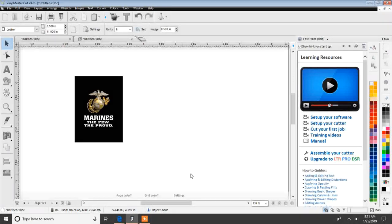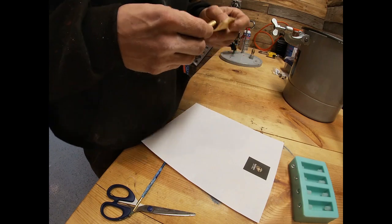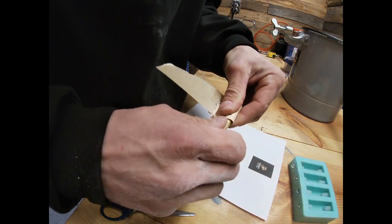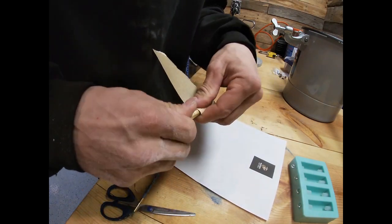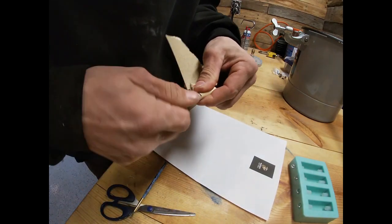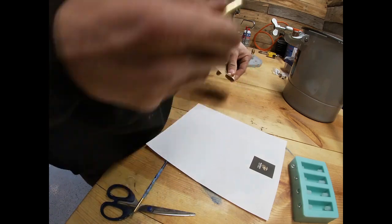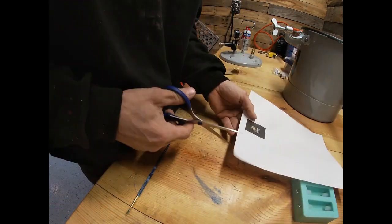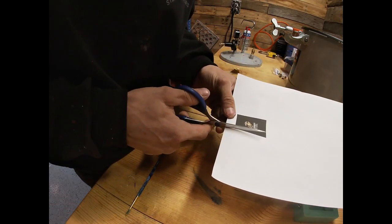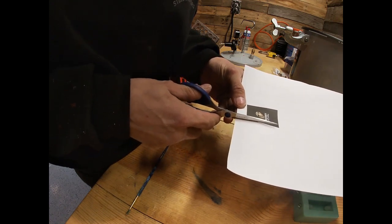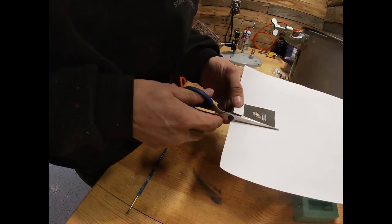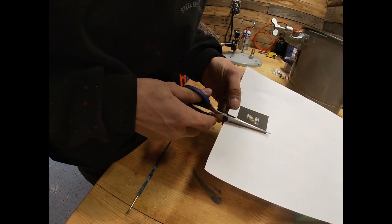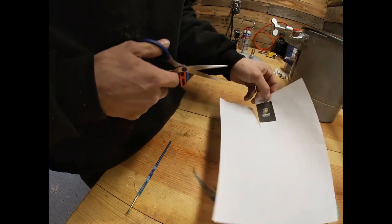Alright, so now we got that printed out. First thing I'm going to do is scuff up this tube a little bit more. You want something for the glue to stick to. And then we'll cut out our label. I'm just going to use these scissors here. You can use a ruler and exacto knife to get it nice and straight.